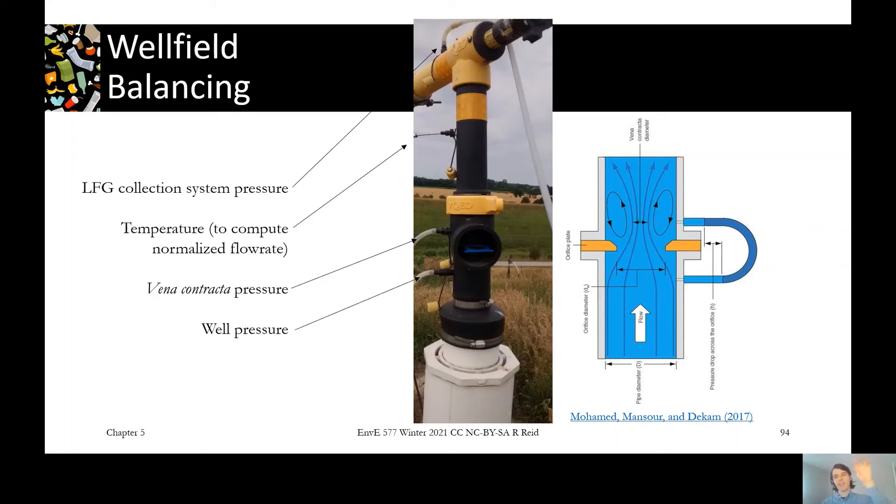And then at the very top, we have a port that measures the pressure on the blower side of the valve. So this is before the pressure would be decreased by being forced through the constriction of the valve. And that tells us how much pressure is available at this location. So if the valve was open 100%, then this pressure would be very similar to the pressure a little bit down the wellhead. But as that valve's closed more and more, then the pressure between them becomes different.